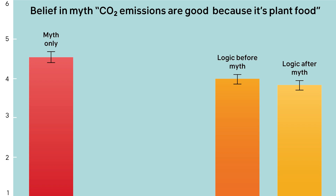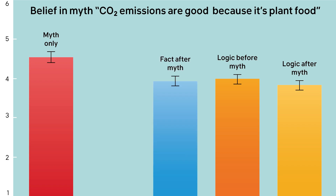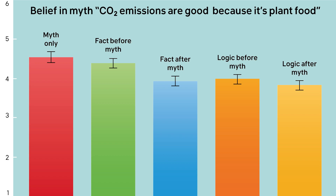Order didn't matter with logic-based corrections, but with the fact-based correction order did matter. It was effective as a debunking if the fact-based correction was the last thing people were shown, but if the misinformation was the last thing people read, the myth cancelled out the fact-based correction. So if you're using facts to counter misinformation, the order can matter — facts can be cancelled out by misinformation.